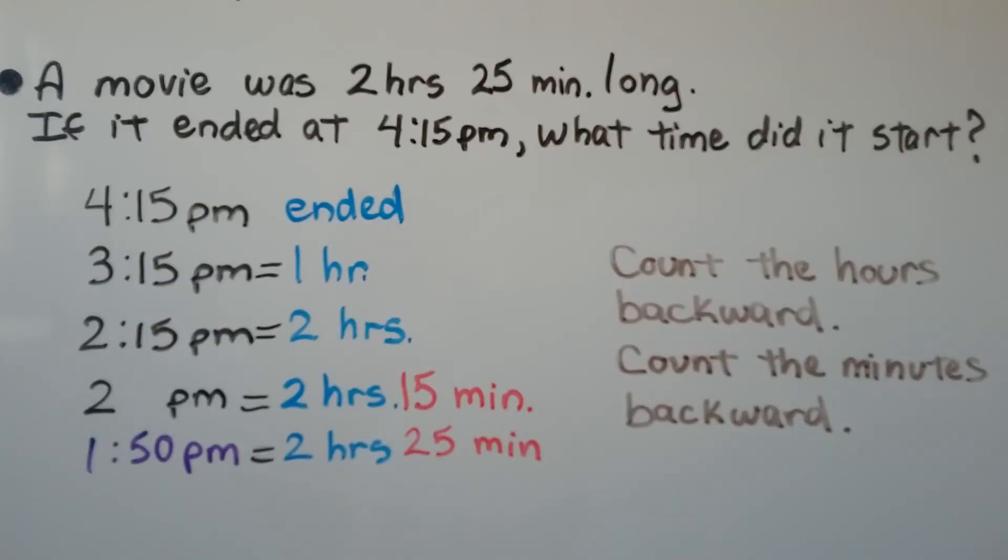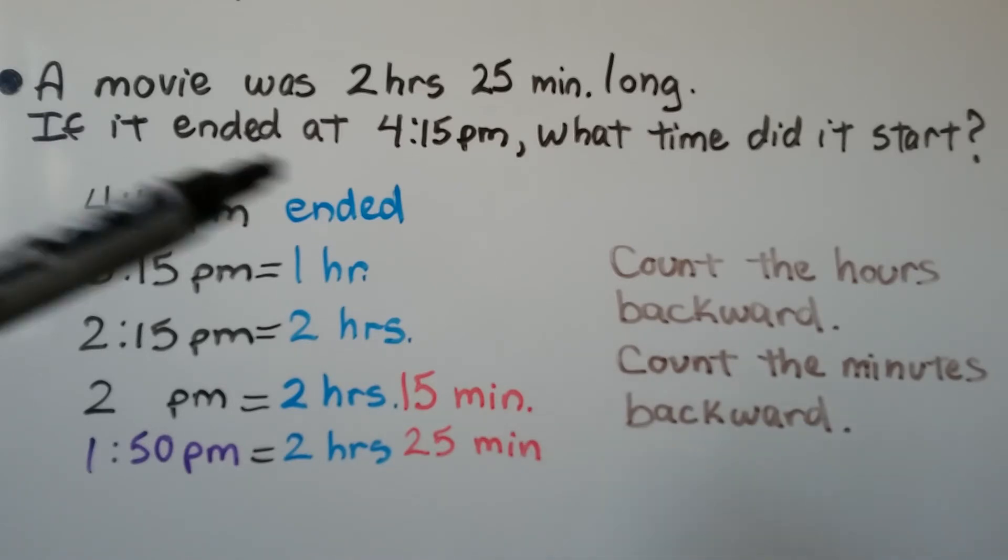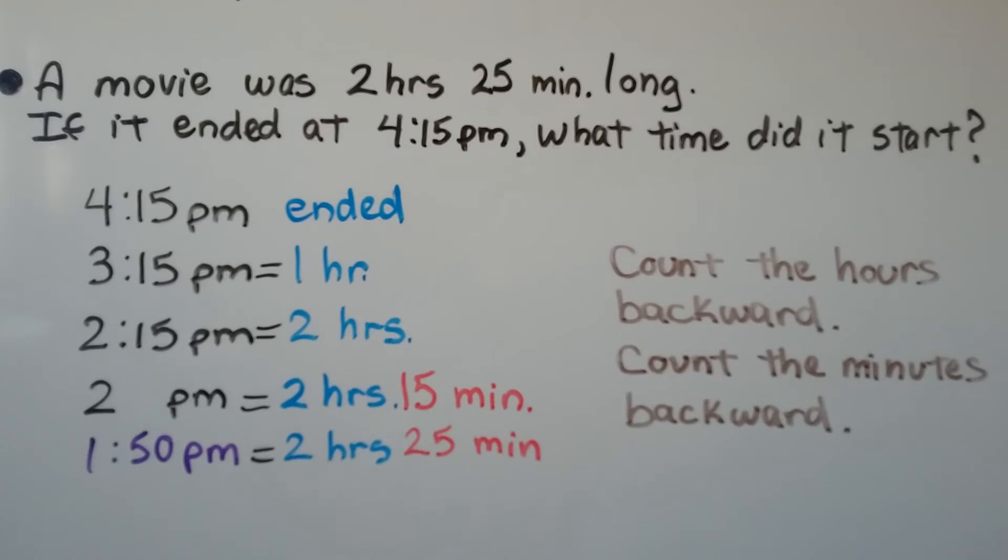If a movie was 2 hours 25 minutes long and it ended at 4:15 p.m., what time did it start? We can count the hours backwards and count the minutes backwards. It ended at 4:15 p.m. so an hour before that is 3:15 p.m. 2 hours before that is 2:15 p.m.